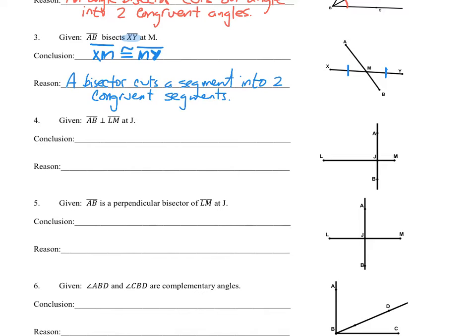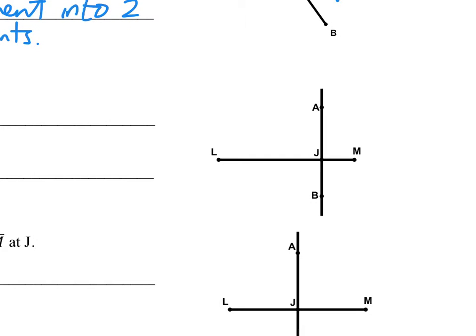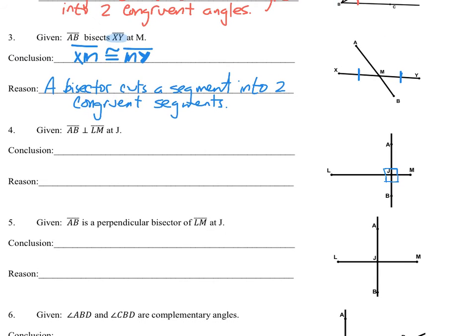AB is perpendicular - that upside-down T is the perpendicular symbol - to LM at J. If we know they're perpendicular at J, we know that each one of those angles is going to be a right angle. They're perpendicular, which means they're all 90 degrees, which means they're all right angles. They're all right angles, so they're all congruent to one another. The question is: which conclusion do I write?